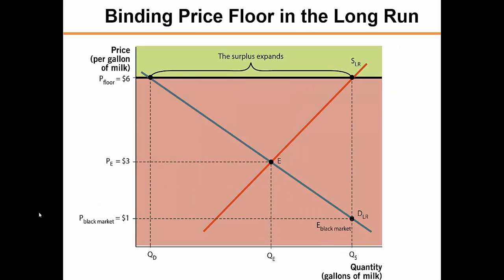In the long run, consumers are afforded the chance to find good substitutes for milk at lower prices. This added flexibility makes the long-run demand for milk more elastic in an unregulated market. The demand curve is more elastic than its short-run counterpart and QD is quite small. In the long run, producers are more flexible and therefore supply is more elastic — the pool of potential milk producers rises as closely related businesses are able to retool their operations to supply more milk. The flatter supply curve reflects this flexibility, and quantity supplied expands and becomes much larger than before. The increased elasticity on the part of both producers and consumers makes the surplus larger in the long run, and the unintended consequences observed in the short run are magnified.